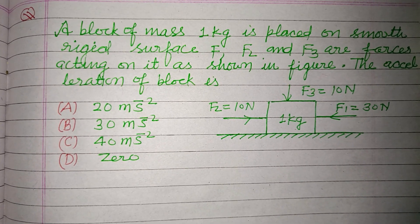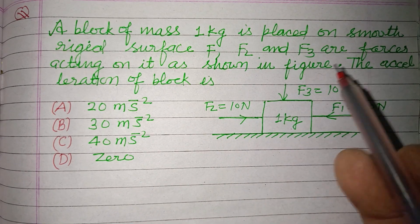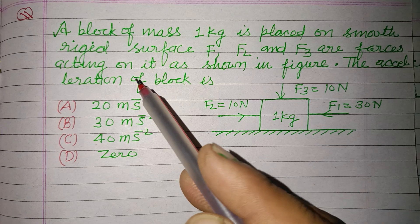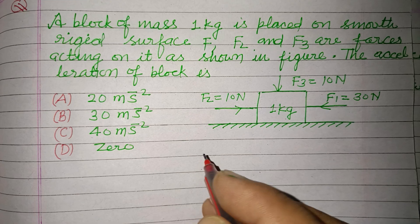Hello viewers, warm welcome to this YouTube channel. A block of mass 1 kilogram is placed on a smooth rigid surface. F1, F2, and F3 are forces acting on it as shown in the figure. The acceleration of the block is...